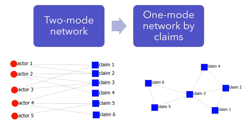After converting the two-mode network by actors, you can also convert the two-mode network to a one-mode network by claims. In this network, if a pair of claims are expressed by the same actor, you use a tie to connect the nodes. You can consider this new network as the policy co-occurrence network. If a claim has a high degree centrality, it means that the claim has a high frequency of co-occurring with other policy claims.